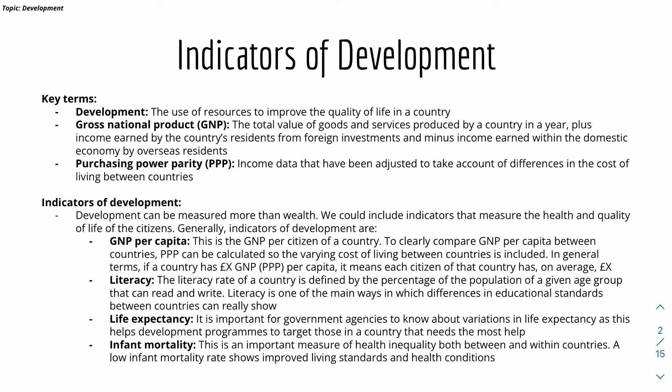We also have Purchasing Power Parity, or PPP, which is income data that has been adjusted to take into account differences in the cost of living between countries. Development can be measured in multiple ways other than just wealth. For example, we can use GNP per capita, literacy rate — the percentage of a population of a given age group that can read and write — life expectancy, which relates to the healthcare of a country, and infant mortality rate, which is also related to the healthcare of a country.